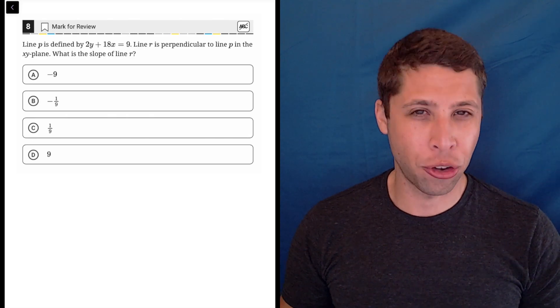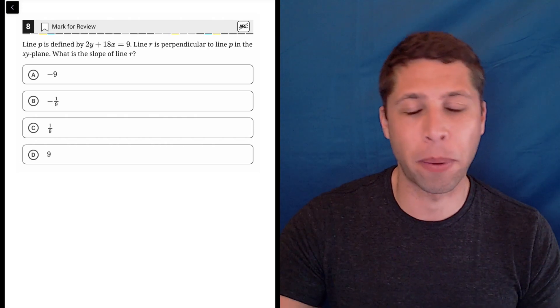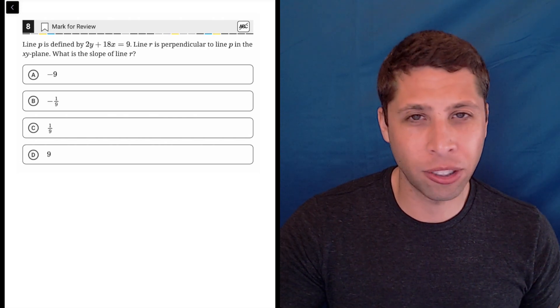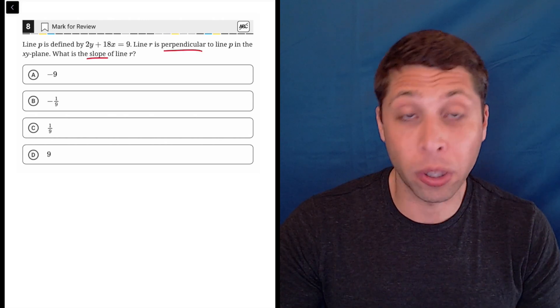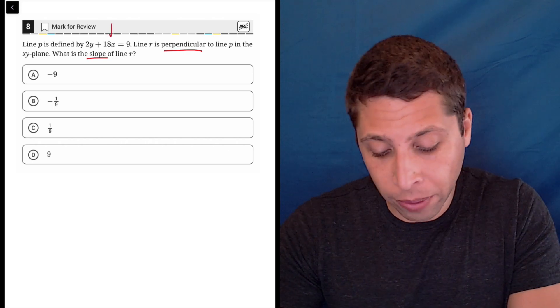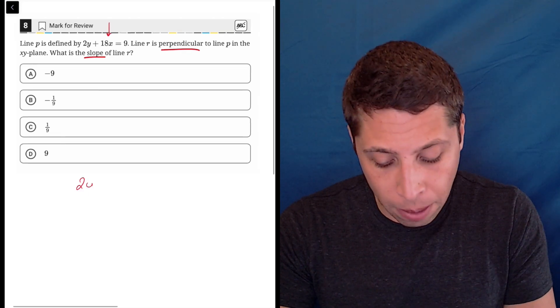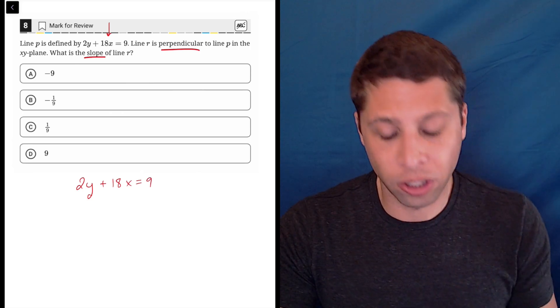This is another question where maybe there's a temptation to graph it using Desmos. We have an equation and we can kind of see sometimes what perpendicular lines look like, but I just think that's a waste of time. We're being asked about perpendicular, and that means we're going to need to think about the slopes of the two lines. So let's start by just rearranging the first equation so that it's in a better format. This is not the format that we want to understand the slope.